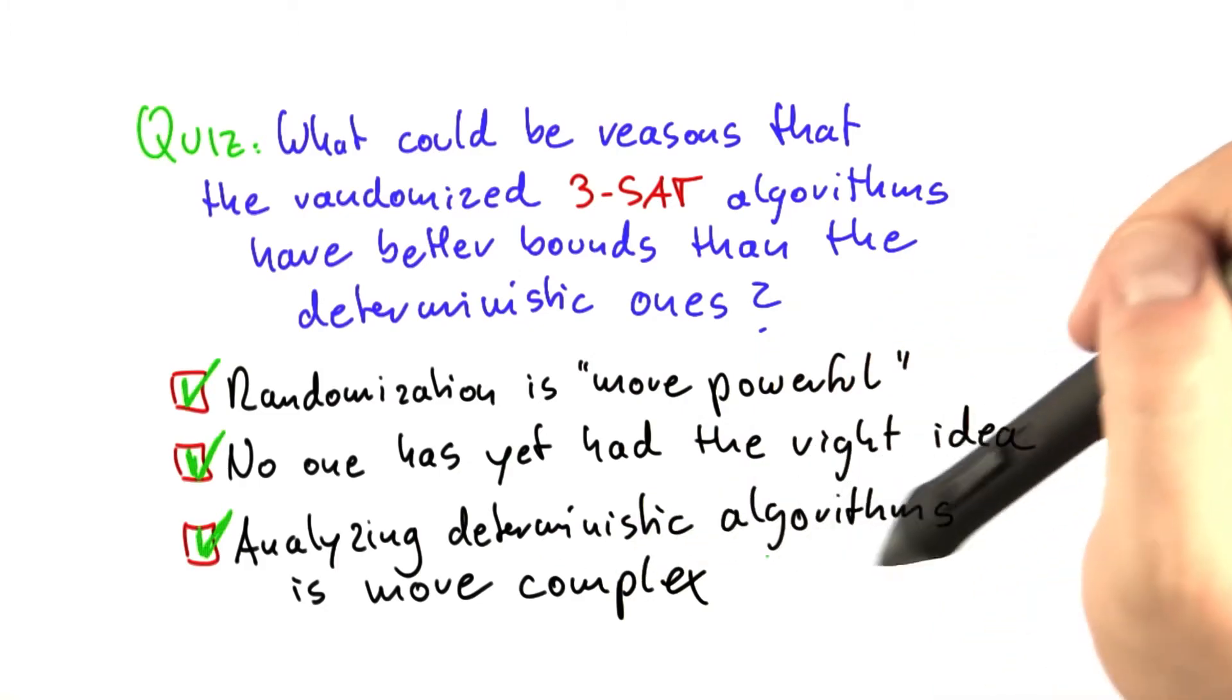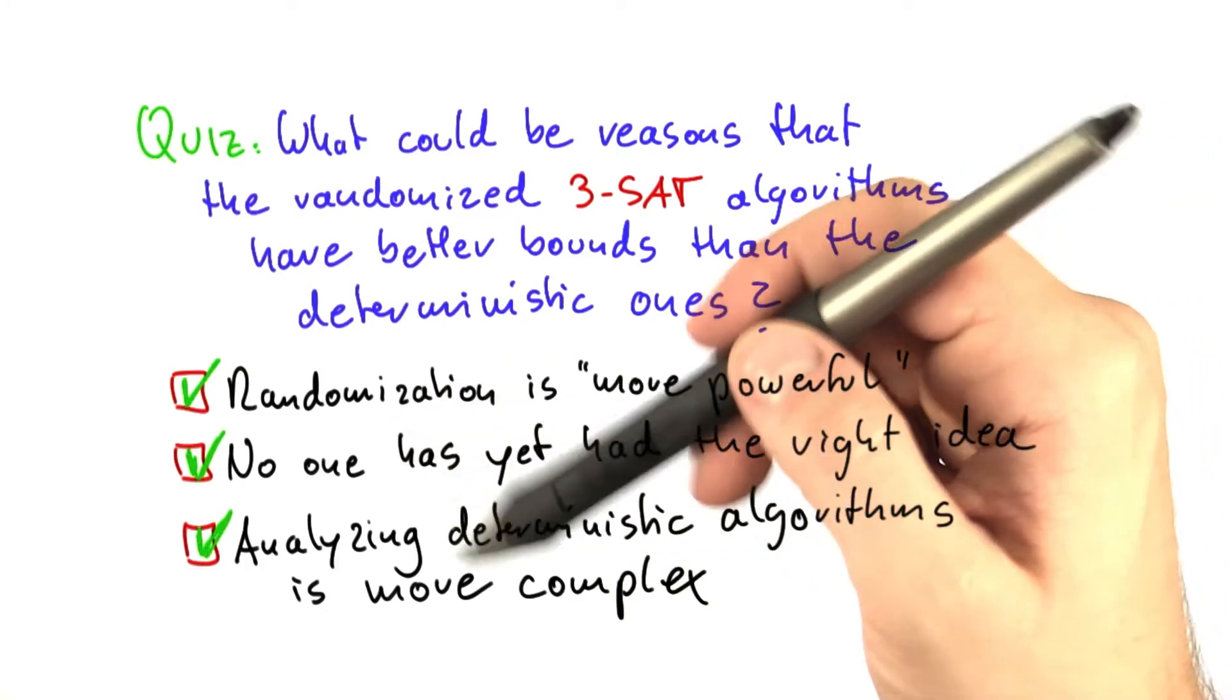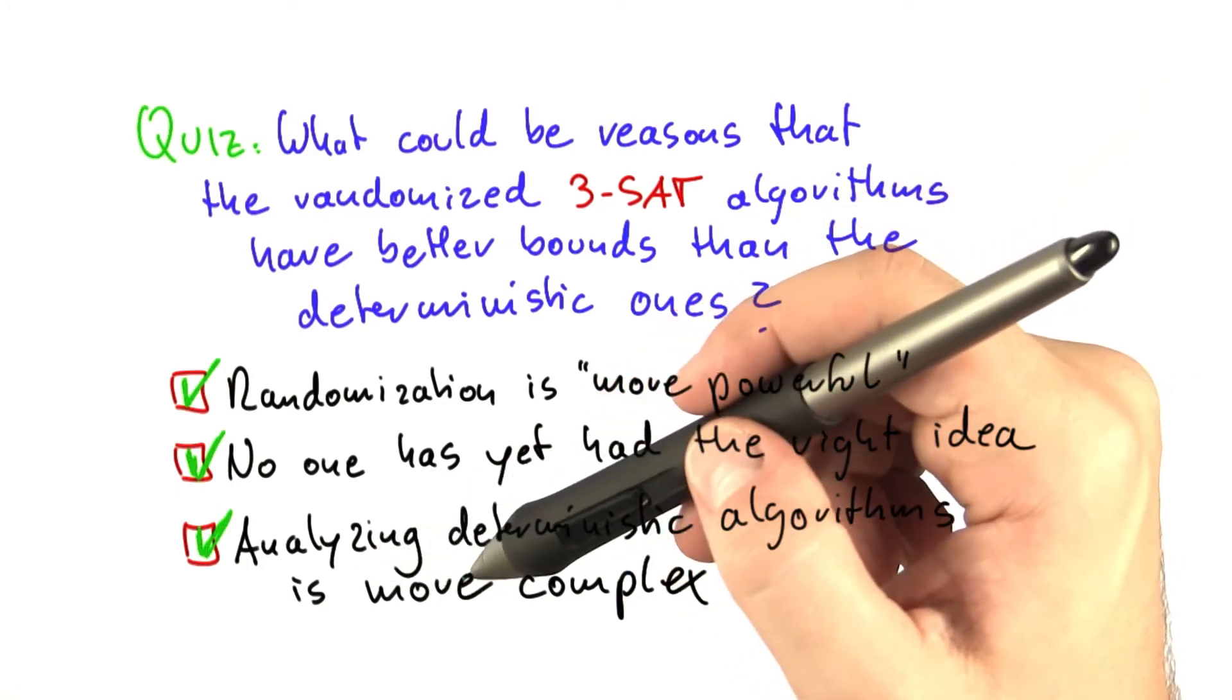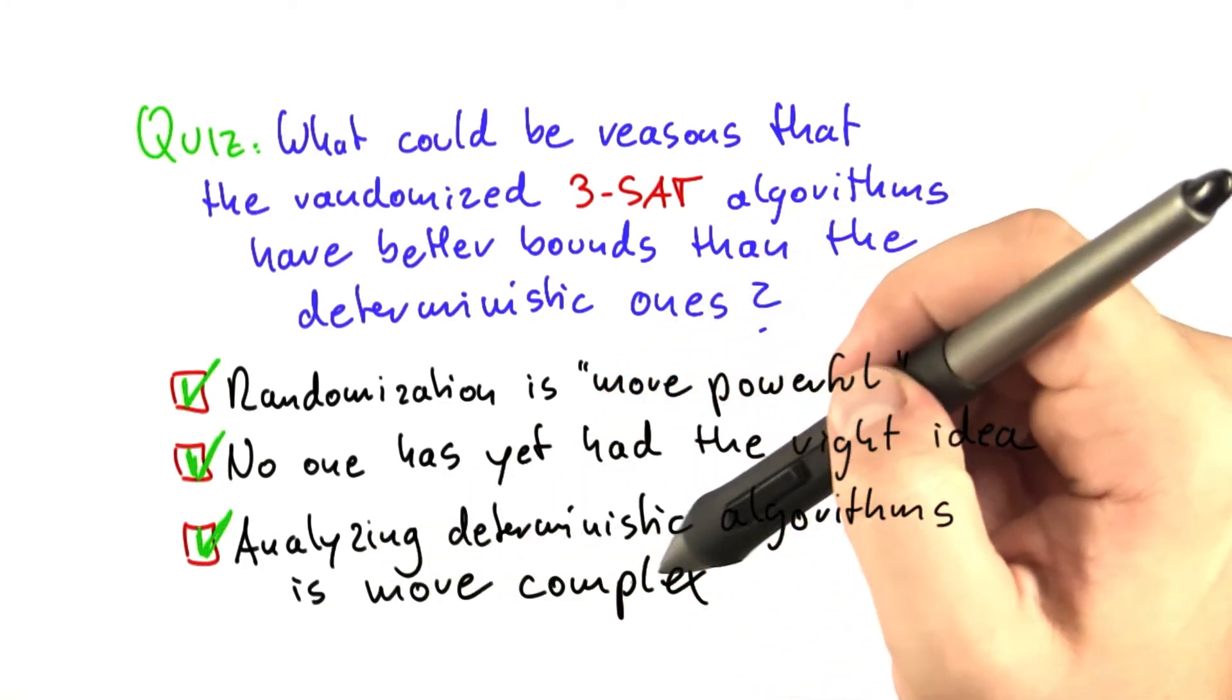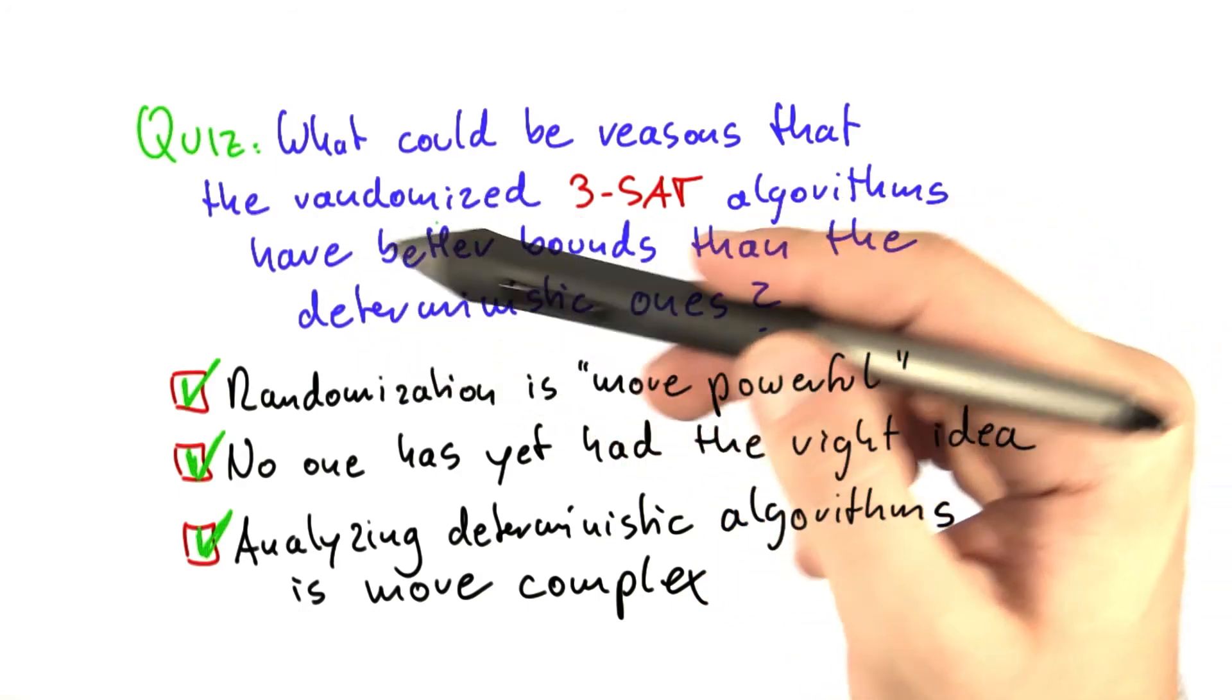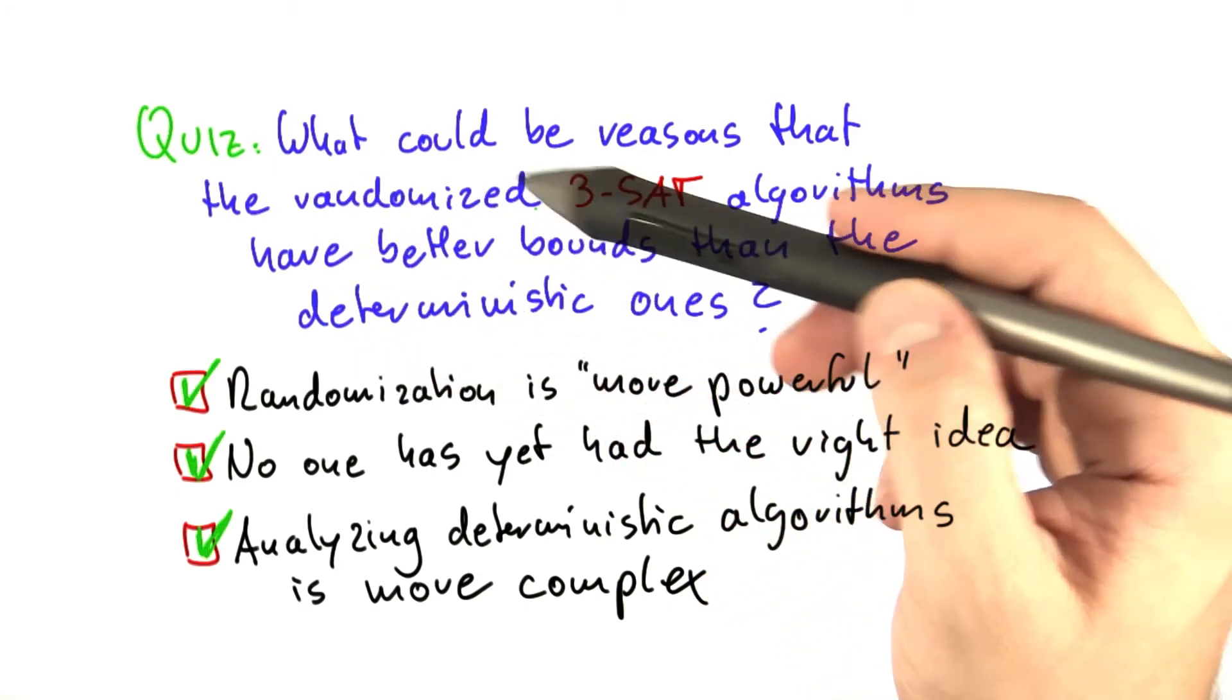For the deterministic algorithms, however, you have to go through a lot of analysis to prove those bounds. So it could be that you could modify some deterministic algorithm to be better than the randomized one, but simply the analysis required to do so is much more complex.